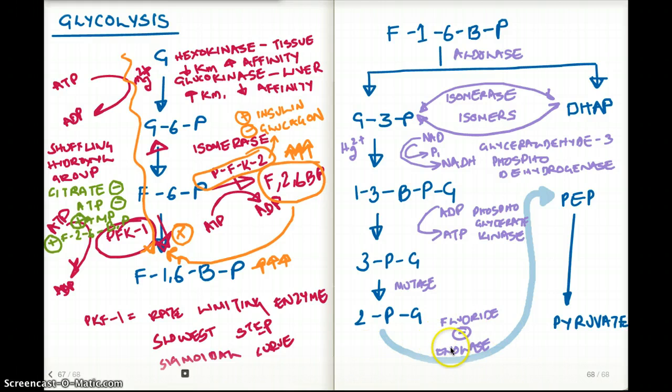So from PEP to pyruvate, this is achieved by the enzyme pyruvate kinase, which also makes another ATP from ADP. Again, I want to mention that this is 2 of these steps that are going on simultaneously, so really we're making 2-ATP rather than 1-ATP.